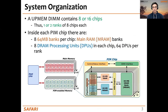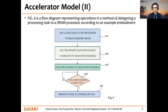A UPMEM-based PIM system is composed of a host CPU connected to several DRAM DIMMs that work as the main memory, and also some DIMMs of PIM-enabled memory. On each PIM-enabled DIMM, there are several chips, and inside each chip, there are several DRAM banks called MRAM. Connected to them is an in-order pipeline called the DRAM Processing Unit or DPU. The UPMEM-based PIM system follows the accelerator model, where the host processor explicitly copies data from main memory to the PIM-enabled memory and then launches kernel execution on the memory side using a specific command.